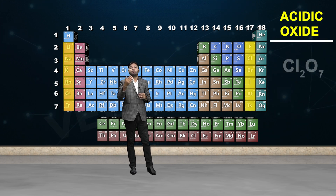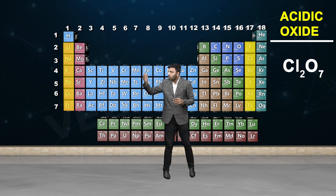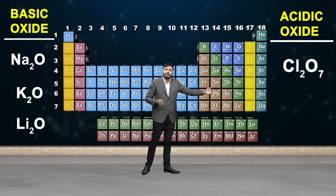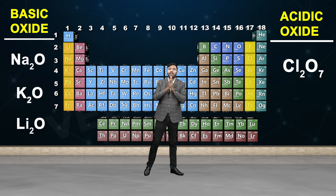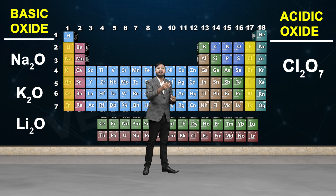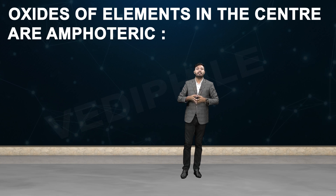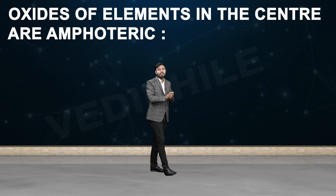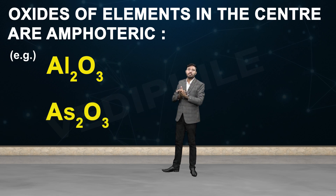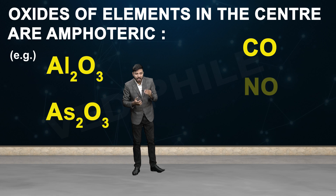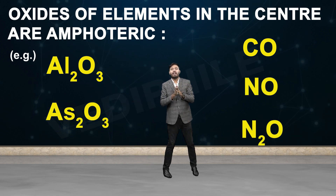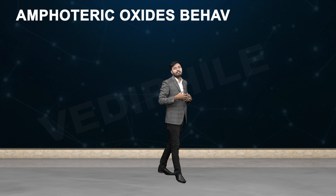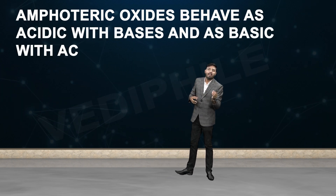For example, Cl2O7 is an acidic oxide. So the oxides formed by extreme left elements are most basic, and those formed by extreme right elements are most acidic. Oxides of elements in the center are amphoteric — for example, Al2O3, As2O3, CO (carbon monoxide), NO, and N2O are all amphoteric oxides. Amphoteric oxides behave as acids when reacting with a base, and behave as bases when reacting with an acid.